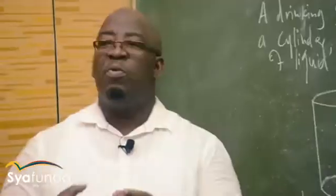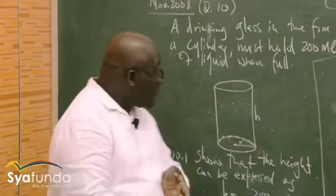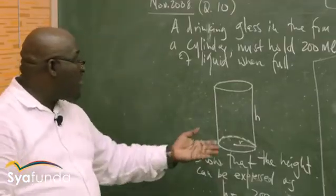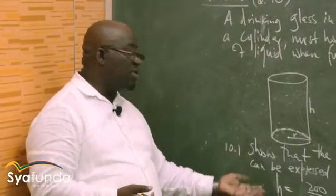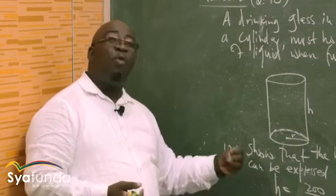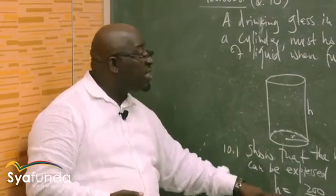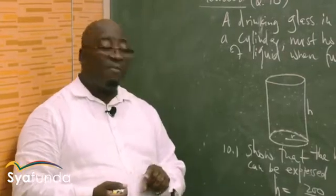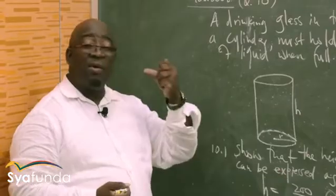In this section, you must expect at least three questions. The first question will be wanting you to express something in terms of something. In this particular case, show that the height of this glass can be expressed as H equals that value. Once you've got this, whether you know how to do it or not, you've got to use this in the second question.